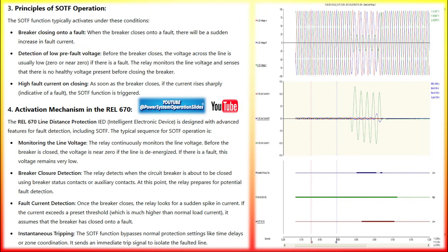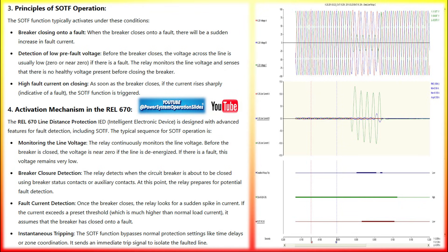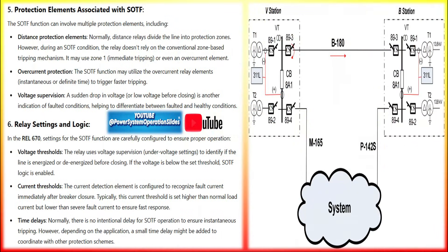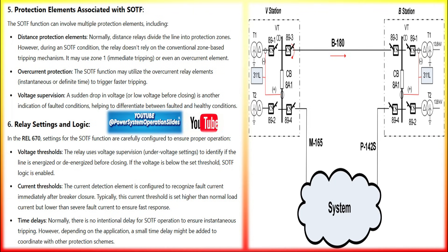When a circuit breaker closes onto a faulted line, the fault current can cause severe stress on power system equipment, including transformers, transmission lines, and circuit breakers. The objective of SOTF is to minimize the duration of fault current. Fast detection and isolation reduce the fault energy dissipated in the system. SOTF also provides instantaneous tripping.